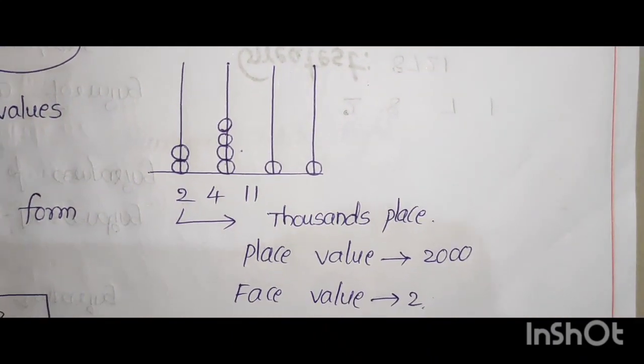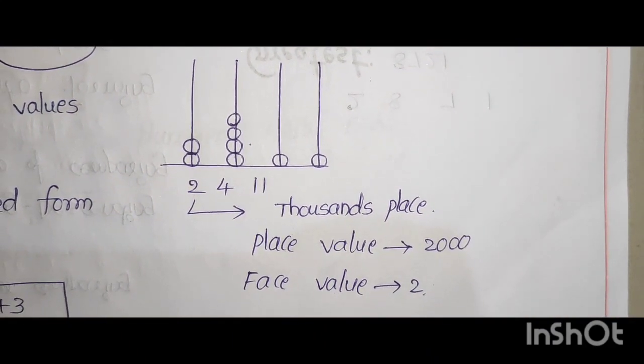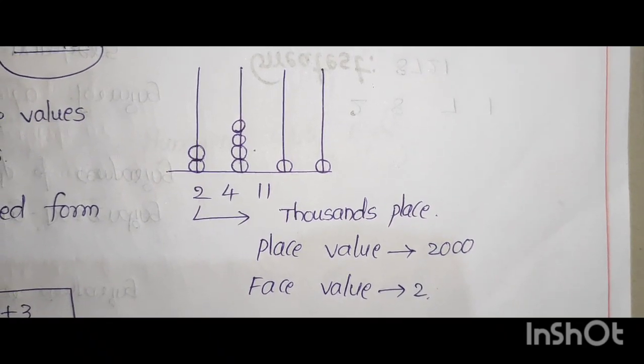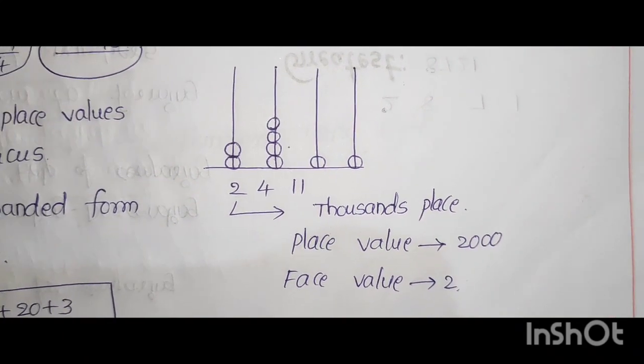2, 4, 1, 1. 2 is the 1000 place. Place value 2000. Face value 2. This is the process for explaining place and face values.